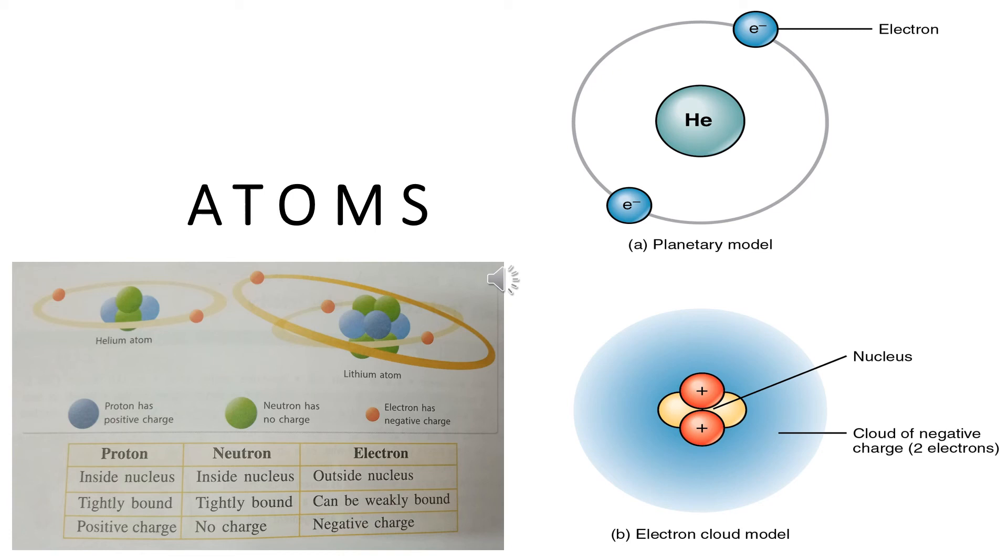And the electron will be going around this nucleus. The electron will be outside the nucleus and they are weakly bonded compared to proton and neutron and they are negatively charged. When you see here, the planetary model like helium. Helium is a second element in the periodic table that has two electrons. Atomic number is two. That means there are two electrons that revolving around the nucleus of a helium atom. These electrons, when they start moving, that constitutes an electric current.